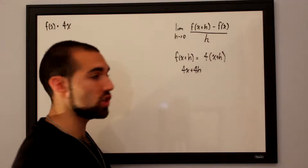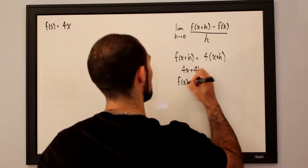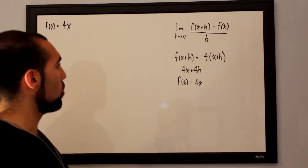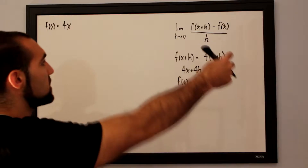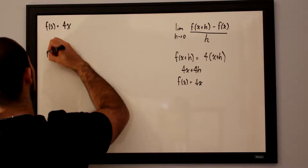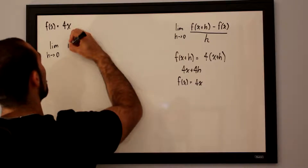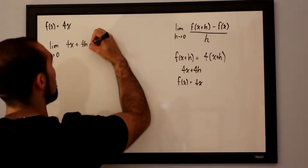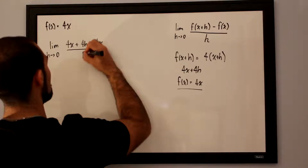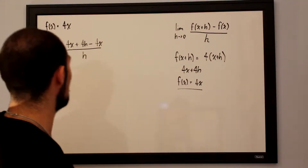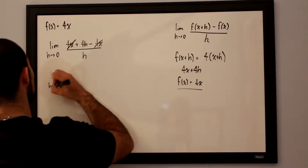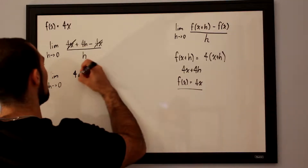We want to subtract off the initial function f of x equals 4x, then divide the entire thing by h and take the limit as h approaches 0. Plugging everything into their place — f of x plus h minus f of x divided by h — we get the limit as h approaches 0 for 4x plus 4h minus 4x, all over h. We notice the 4x terms cancel, leaving us with the limit as h approaches 0 for 4h over h.